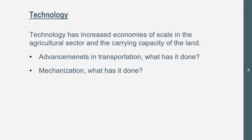Mechanization — what has it done? It has allowed the number of people working on a farm to decrease, but allowed people to buy more farmland and make more money because it's less labor-intensive. They don't have to hire as much labor, and they don't have to spend 12 hours a day with the animals. That's what mechanization has done.